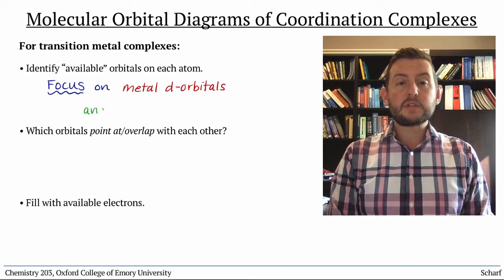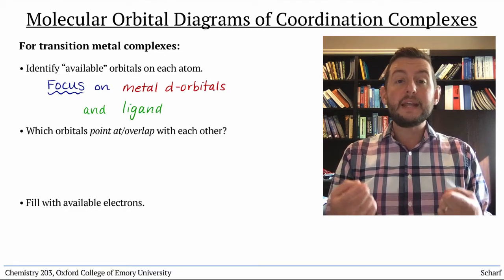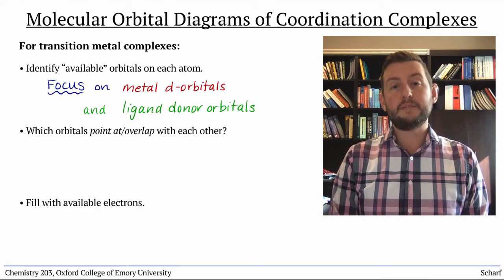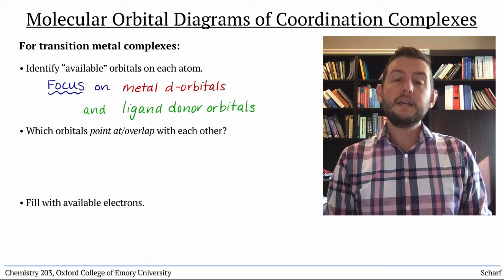For now, we'll just focus on the ligand orbitals that are donating to the metal in their Lewis base capacity, typically the HOMOs of the ligands.